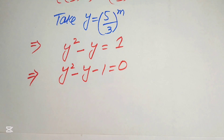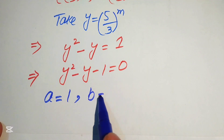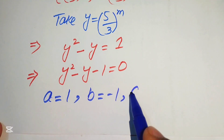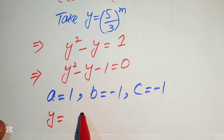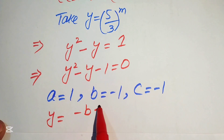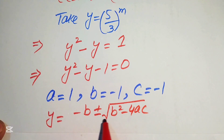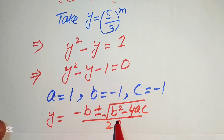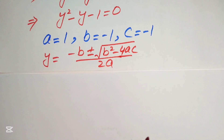This is a quadratic equation, and we solve it using the quadratic formula. The coefficients are: a = 1, b = −1, and c = −1. The quadratic formula is: y equals minus b plus or minus square root of b squared minus 4ac, all divided by 2a.